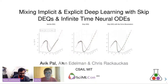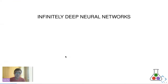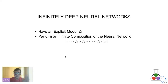Hey everyone, I'm Avik, and I'm going to be talking about mixing implicit and explicit deep learning with skip DEQs. This is work done at Julia Lab in collaboration with Alan Lundman and Chris. I will directly get into what deep equilibrium networks are. They're essentially a class of implicit neural networks used to model infinitely deep neural networks. We have an explicit neural network, f of theta, and we want to apply the same function over the input x an infinite number of times — it's essentially an infinite composition.